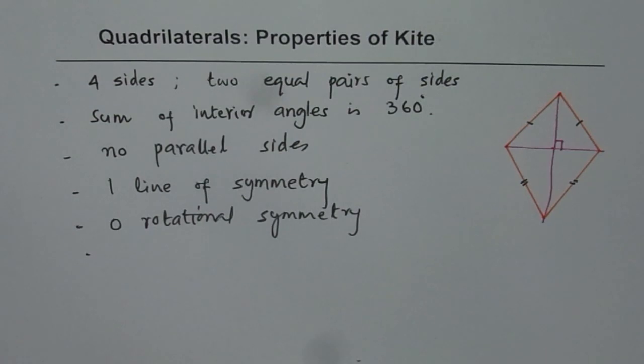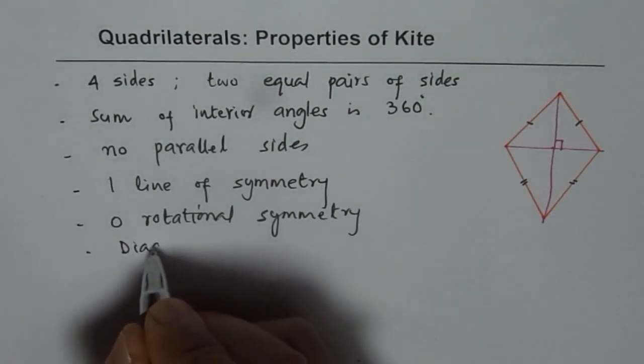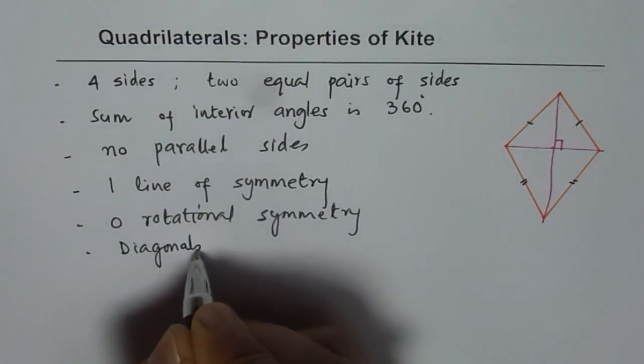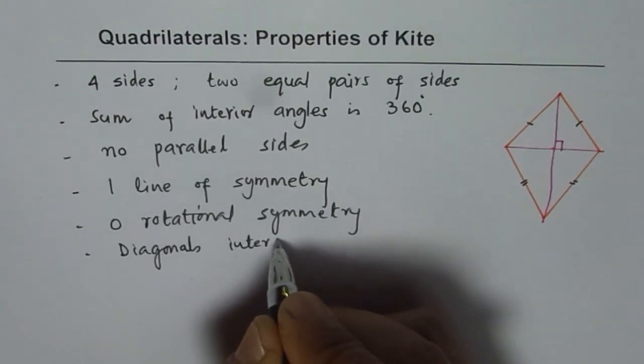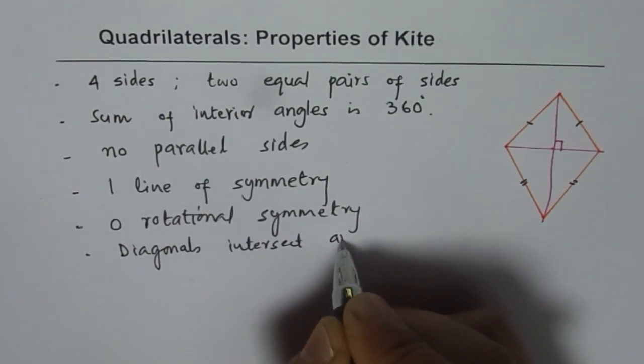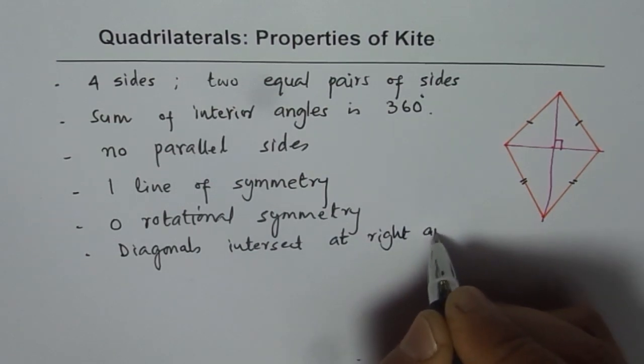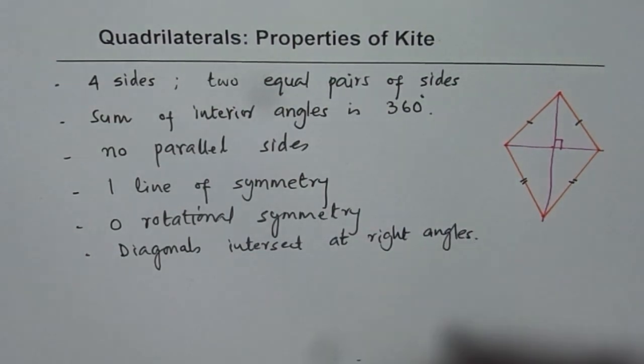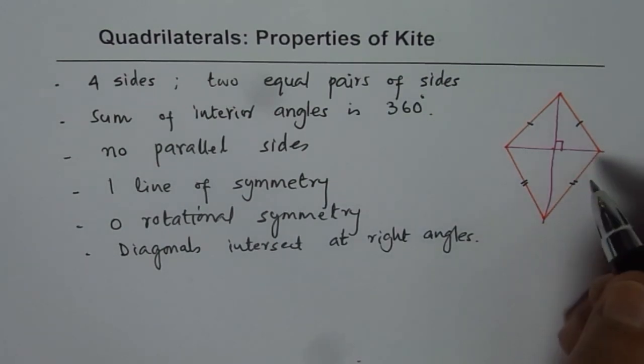Now what else can you say about the kite? Well, the diagonals. So diagonals intersect at right angles, correct?